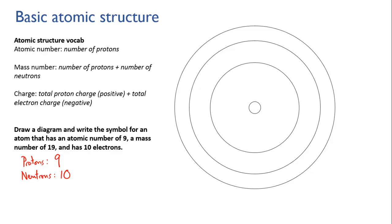So we can work out that the number of neutrons must be 19 minus 9, which is 10. And the number of electrons — we've been given that it has 10 electrons. So let's draw the diagram. First we'll put in the protons — 9 of them — and then we'll put in 10 neutrons.